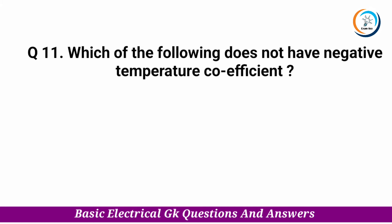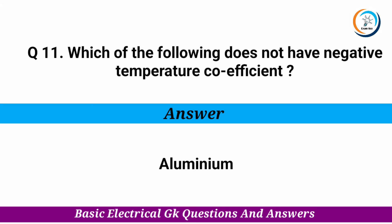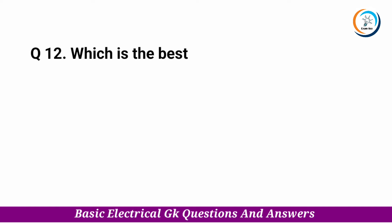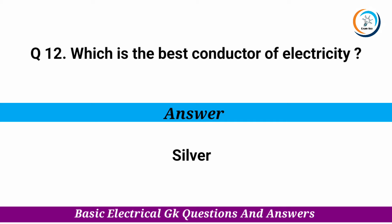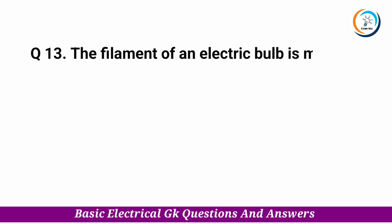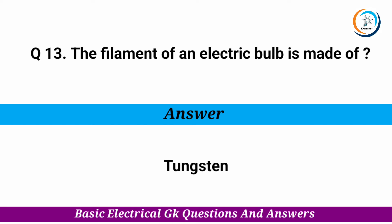Which of the following does not have a negative temperature coefficient? — Answer: Silver. The filament of an electric bulb is made of — Answer: Tungsten.